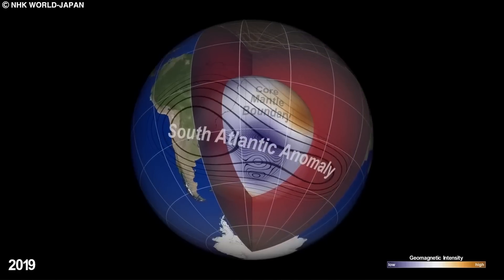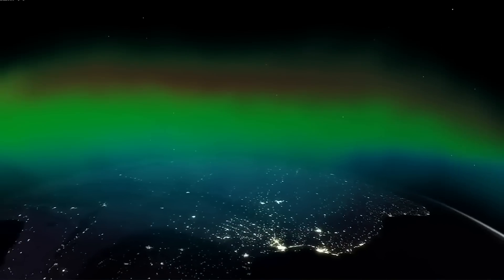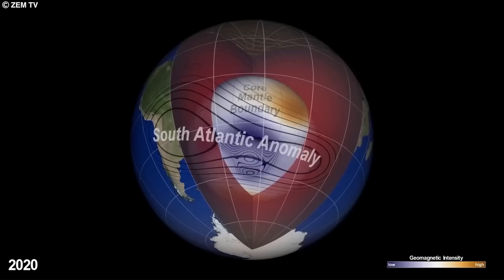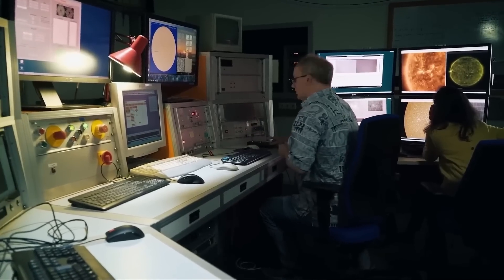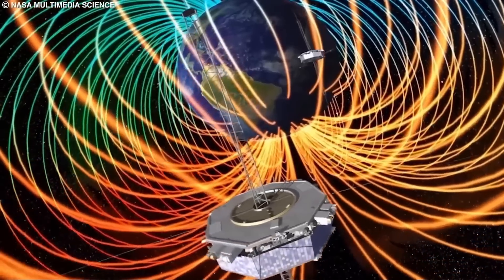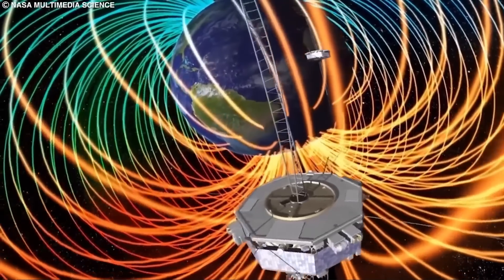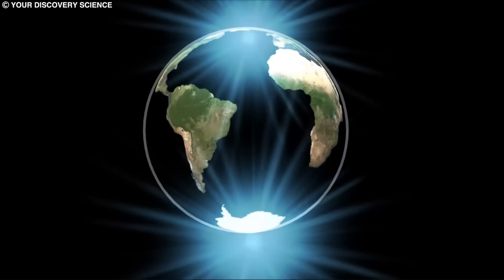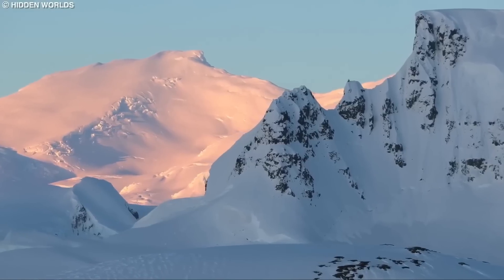This weakening magnetic field is already affecting our satellites in space, particularly in the area between South America and Africa in the Atlantic Ocean, known as the South Atlantic Anomaly or SA. Scientists are trying to figure out what is causing the SA by using data from several satellites, such as the three Swarm satellites launched by the European Space Agency in 2013. The CORSAR project is researching the SA, hoping to find out what might be happening inside the Earth's core to cause it.